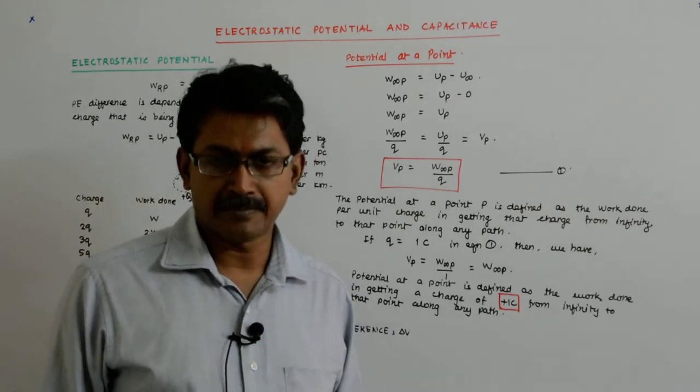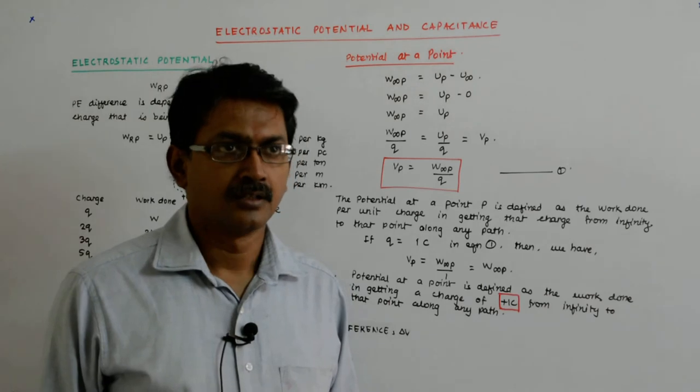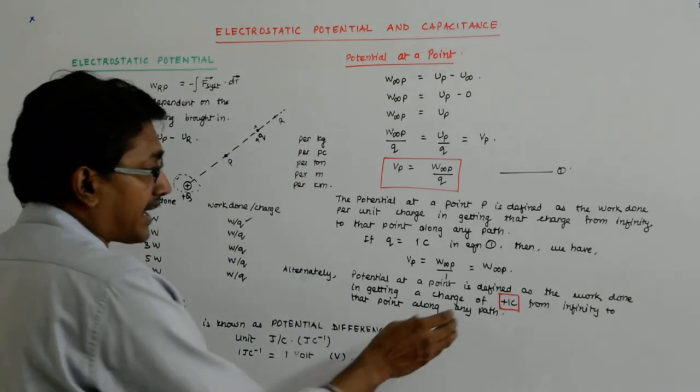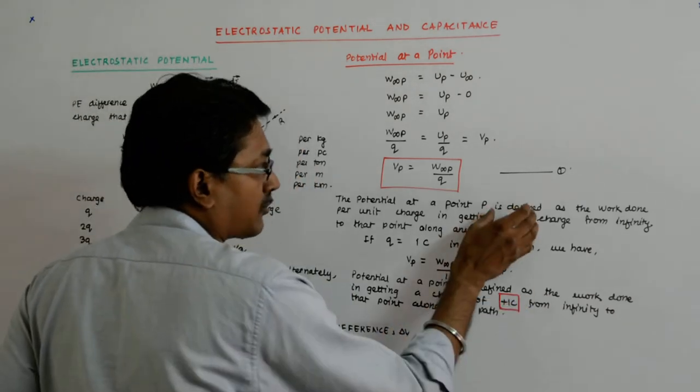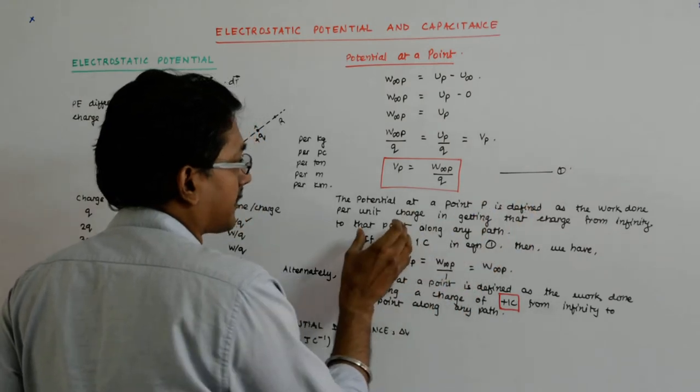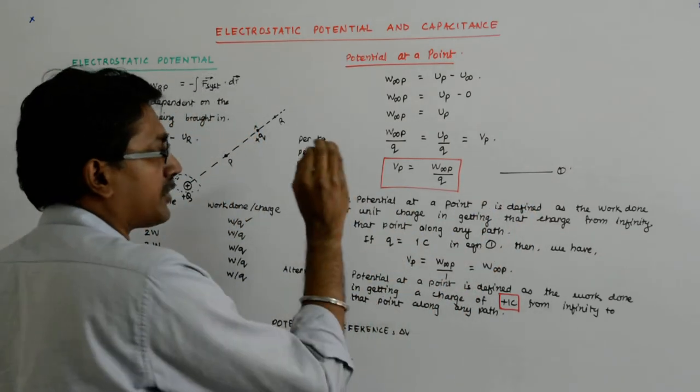Okay, so this is not advisable. This is advisable. Per unit charge means you bring in a very infinitesimal amount of charge, find out the work done, and then divide the whole work by that charge to get the potential.